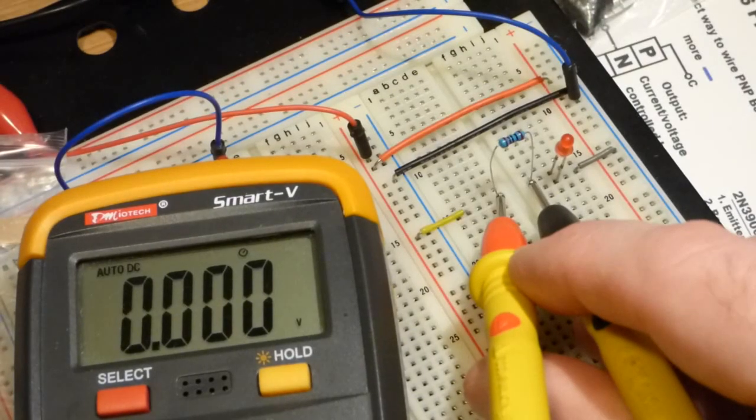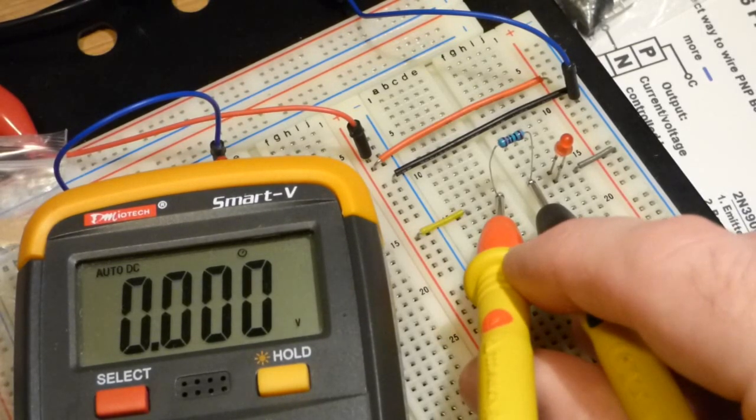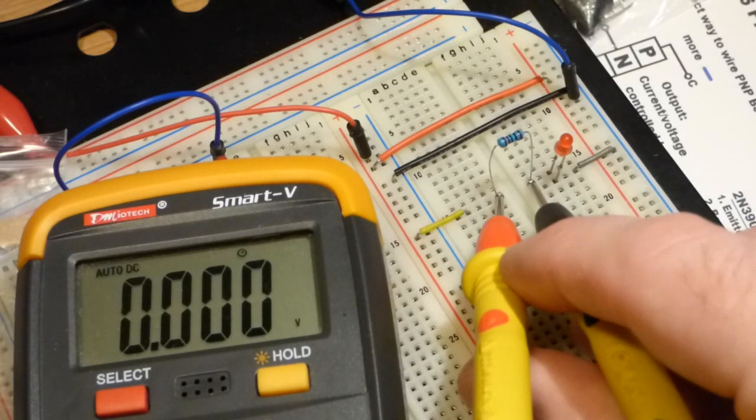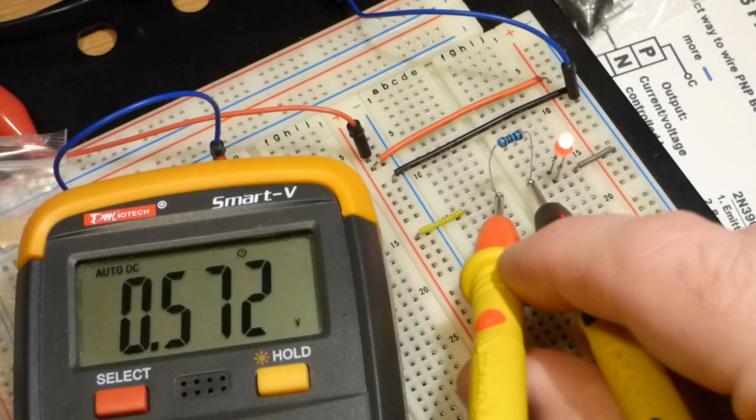So now in this video we're gonna study Ohm's law a little bit by setting the current through the LED here by adjusting the power source voltage.